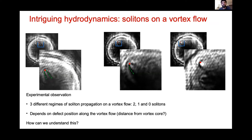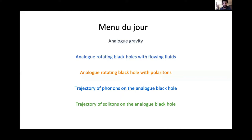So we have three different regimes of soliton propagation on the vortex flow, with two, one, and zero solitons. These regimes depend on where the defect is positioned with respect to the center of the vortex. The question we ask ourselves is: how can we understand the three different regimes and the trajectories of the solitons? What I'm going to present is the blueprint of a systematic study of this question — very much a serendipitous finding.